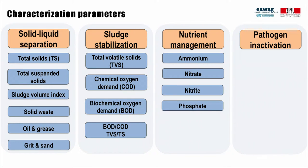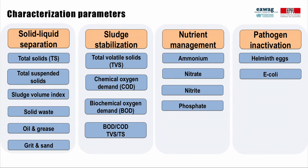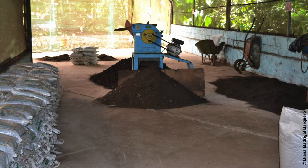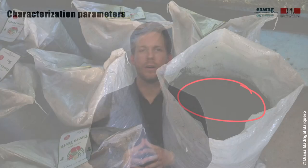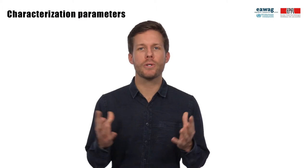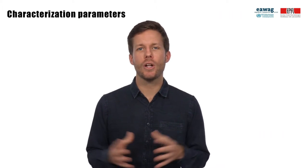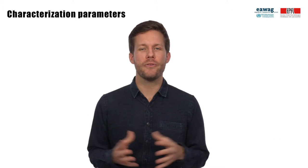Pathogen inactivation is ultimately the most important objective in fecal sludge treatment. Instead of measuring individual pathogens, indicator organisms are used to provide a measure of pathogen concentrations and inactivation during treatment. Examples of indicator organisms are viable helminth eggs and E. coli. Helminth eggs are commonly used as an indicator for pathogens in the solids, for example in dried sludge or compost. In contrast, E. coli are important for the liquid fraction, for example from settling thickening technologies, drying beds, or the effluent from a fecal sludge treatment plant.